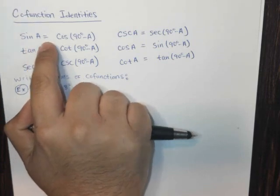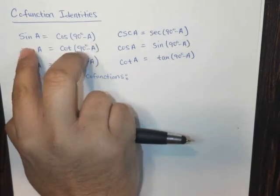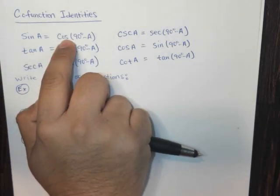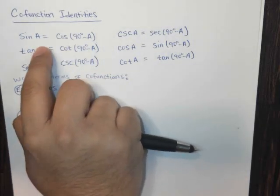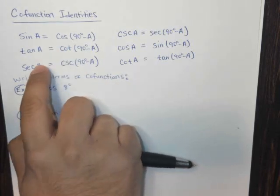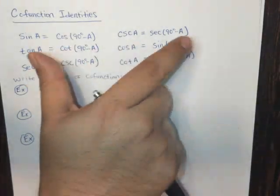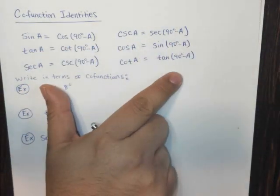First, we have sine of A equals cosine of 90 minus A. So these are the cofunctions: sine and cosine are cofunctions, tangent and cotangent are cofunctions, secant and cosecant are cofunctions. This is just the look and feel of these cofunctions.